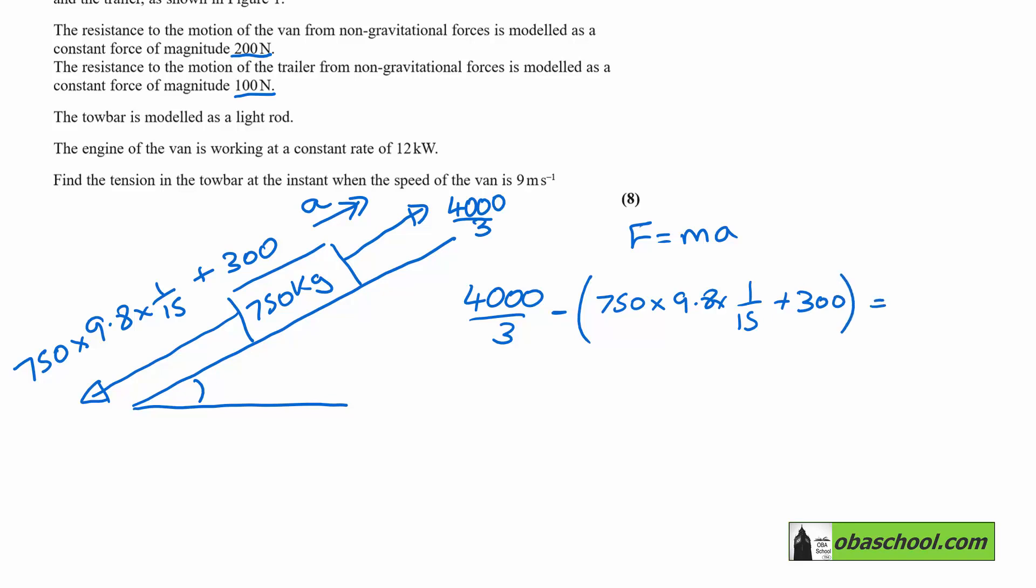And that must be equal to M A. Now, all of that is stuff that we can calculate. And so A is equal to 0.724 recurring meters per second squared.